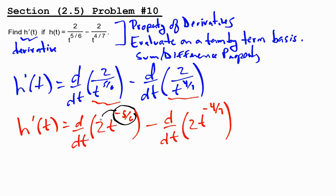Take the exponent and multiply it by the coefficient, and we have that h prime of t is equal to negative 10 over 6 t to the negative 5-6 exponent minus 1. We will address that minus 1 in a moment.